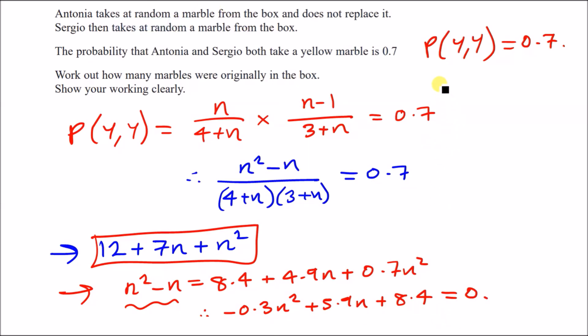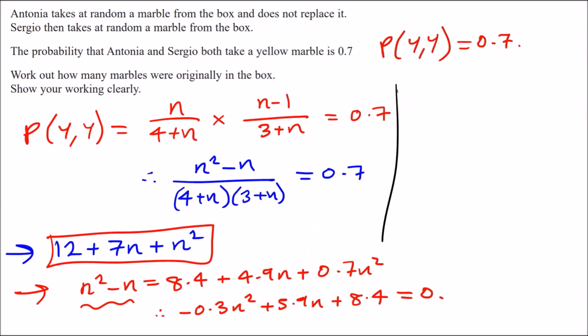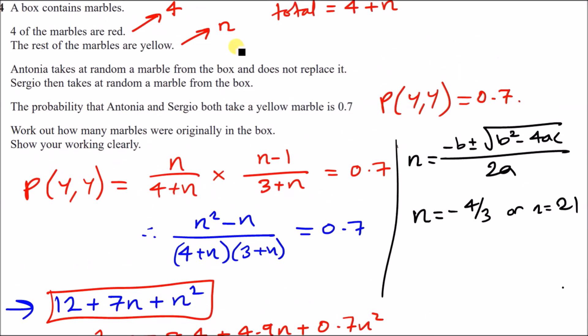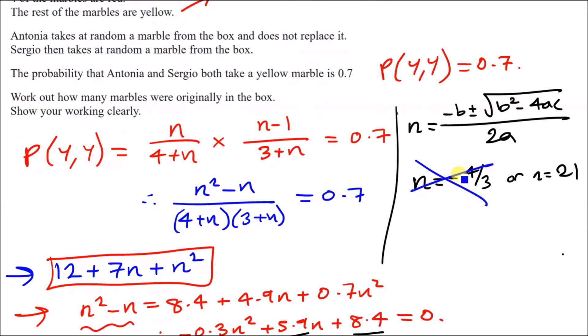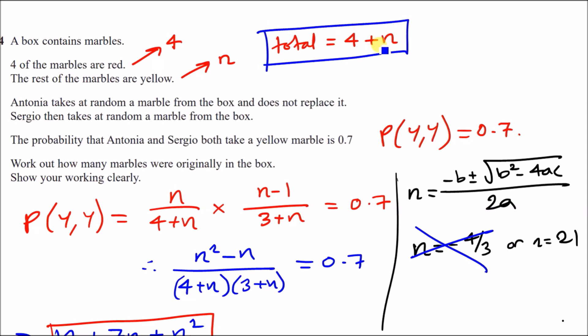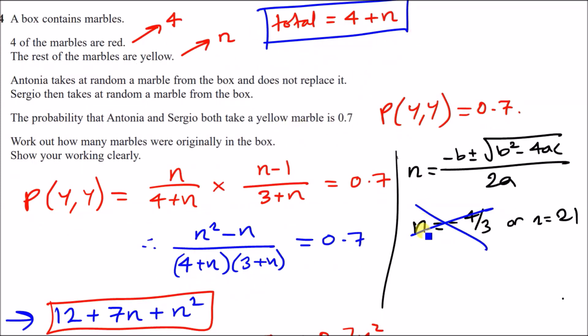Alright, almost done. All we're going to do now is rewrite this as a quadratic here, so we're going to move everything to one side. So let's move these to the right here. So subtracting N squared and adding N, we're going to have minus 0.3N squared plus 5.9N plus 8.4, and that should all equal zero. And now to solve this, just use the quadratic formula here. So quadratic formula tells us that we have minus B plus minus the square root of B squared minus 4AC, all over 2 times A. And plugging in these values, you're going to have an N value of minus 4 over 3, or N equals 21. And now since we're dealing with how many marbles, and we know N must be a whole number, one of the answers cannot be a fraction. N is negative, so it doesn't make sense. So that means that the total number of marbles would be 4 plus N. Since N is 21, it would be 4 plus 21, and that gives a total count of 25 marbles. And that's it, guys.